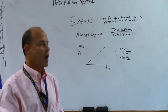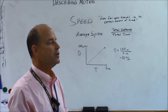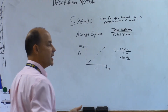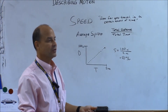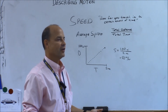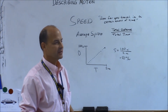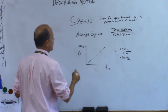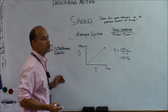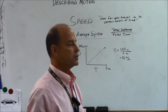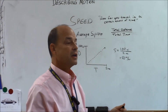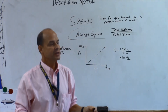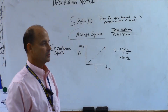But when you're going to Atlanta, are you always going 50 miles per hour? No. Sometimes you get to go 80 on the interstate, and then when you get into Atlanta at 5 o'clock in the afternoon, you've got to go like 10 miles per hour. So we have to talk about instantaneous speed — because average speed is your total distance over total time, but instantaneous speed is what you're going right now.